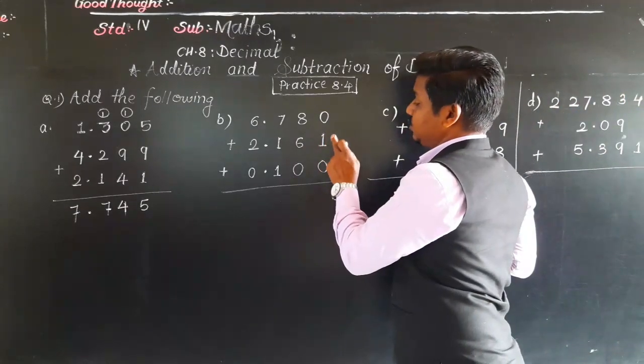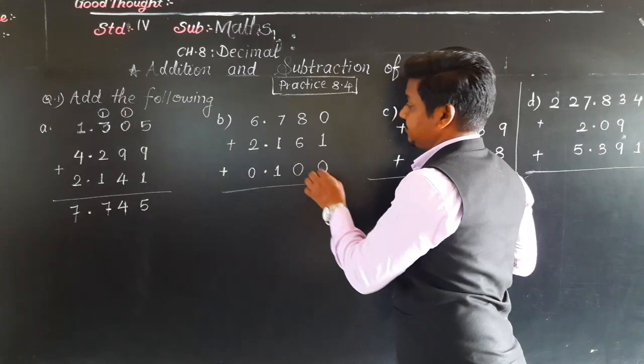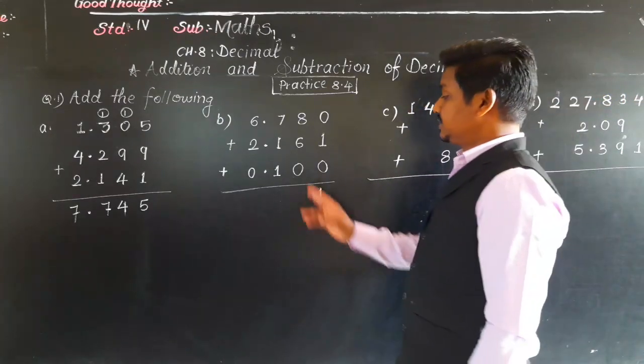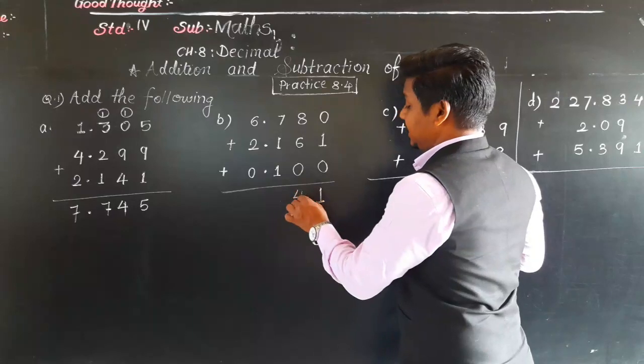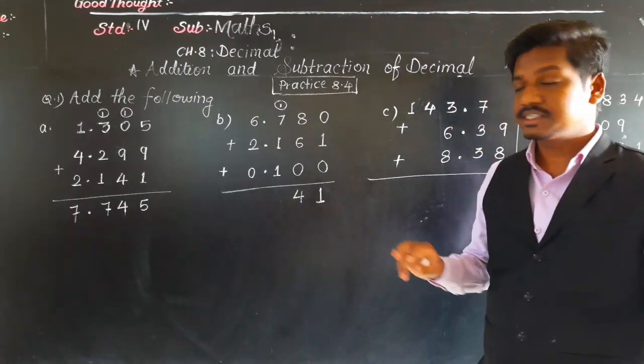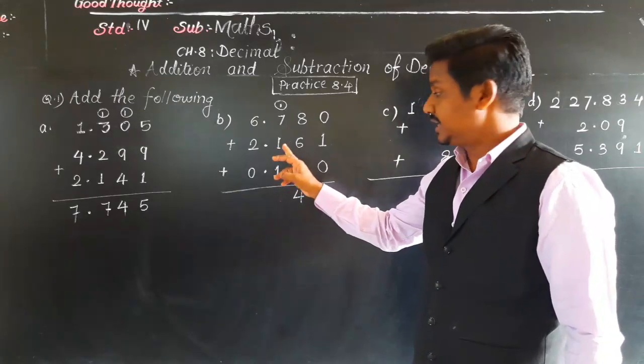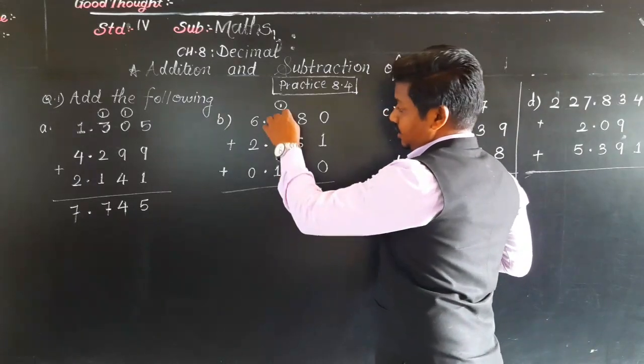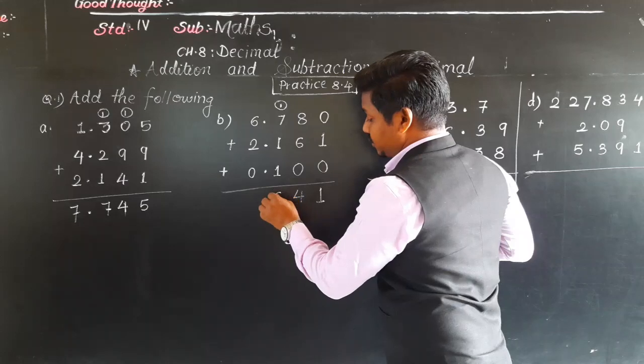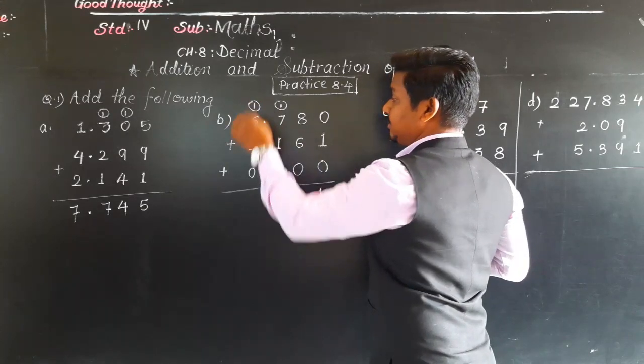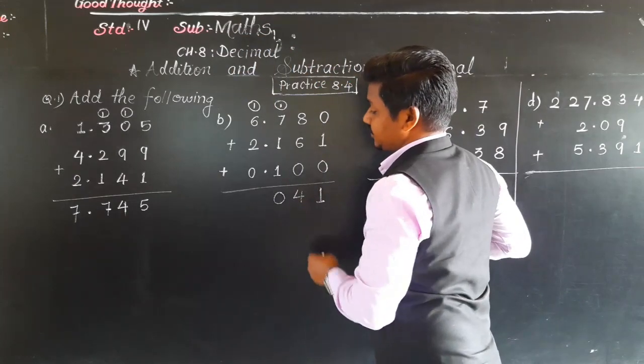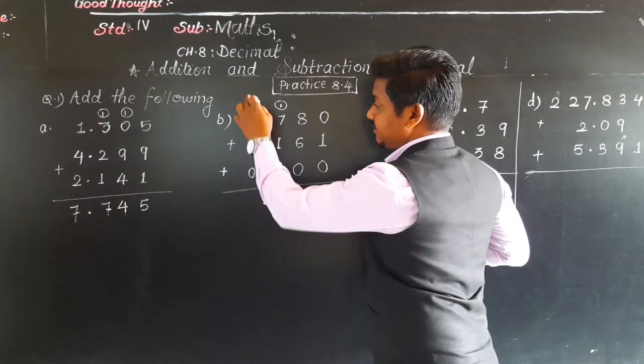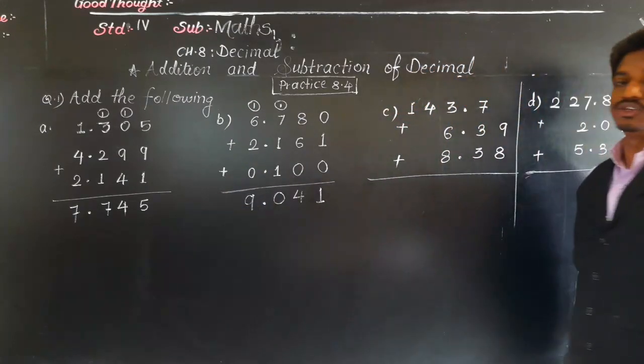0 plus 1 is 1. 1 plus 0 is 1. 8 plus 6 - what is 8 plus 6? Count fast. 8 plus 6 is 14. 14 plus 0 is 14. So 4 will come down, 1 will be carried. Got it? 7 plus 1 is 8, 8 plus 1 is 9, 9 plus 1 is 10. So 0 will be here. See, in this addition we have got 10. So what we will do? We will write 0 here and 1 will take carry into the whole number part, that is on the left side of the decimal point. Then put decimal point here. 6 plus 2 is 8, 8 plus 0 is 8, and 1 is 9. So 9.041.